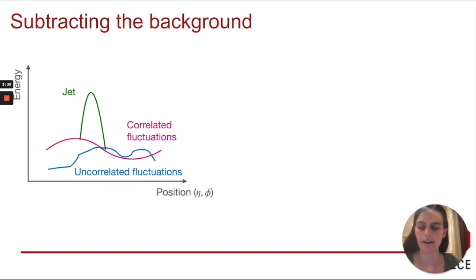Jets in heavy ion collisions sit on top of a large background of correlated and uncorrelated fluctuations. Commonly in ALICE, to treat this background, a pedestal subtraction is performed, which is commonly called the area-based method. However, in this thesis, we were looking to measure jets with low transverse momentum and large radius, which required new techniques to be developed.